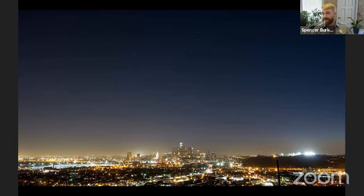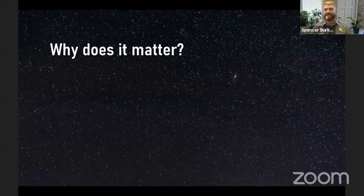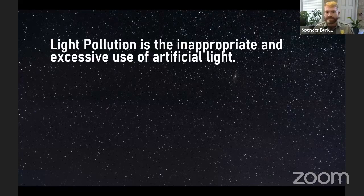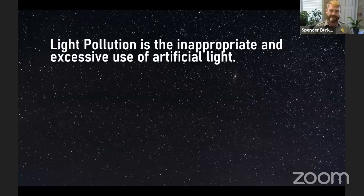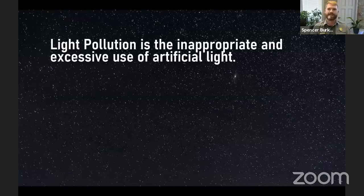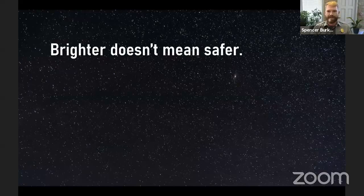Some people would say: why does it matter? They might say this is the cost of progress, or that all this light has made us safer, healthier, more productive — it's the price we pay for civilization. But the definition of light pollution is the inappropriate and excessive use of artificial light. Light that is appropriate is not light pollution — it is important to have lights outside at night. But the amount we light the night now is usually inappropriate and excessive.